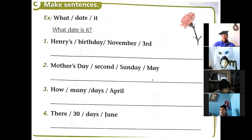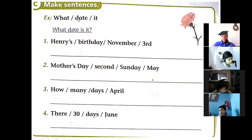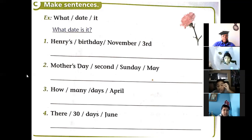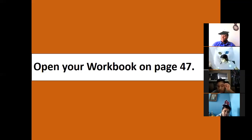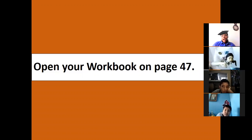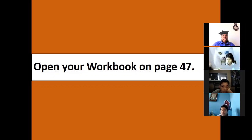On page number 47 we are going to make sentences using the correct way. For example, number one says: 'What day it is?' — that is incorrect. You'd never say 'what day it is.' The correct way to ask is: 'What day is it today?' Today is Friday, or today is Wednesday, July 27th, 2021.